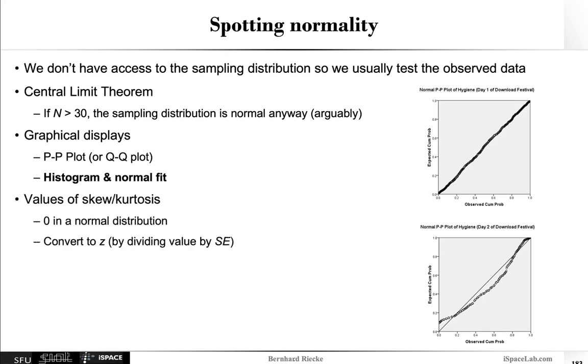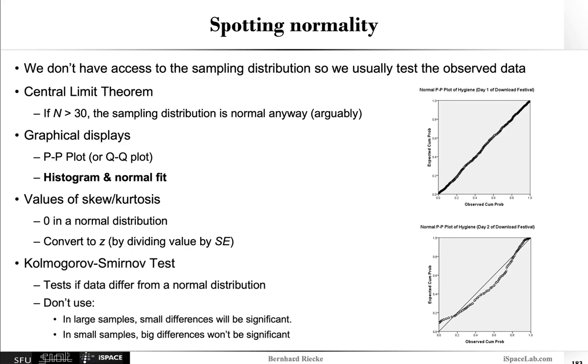You can also look at the values of the skew and kurtosis so it should be zero in a normal distribution and you can always convert to z values by dividing the values by the standard error. And of course you can run a Kolmogorov-Smirnov test to test if the data really differ from the normal distribution. Keep in mind you shouldn't really use this for very large samples because then small differences will be significant but for very large samples you should really have a fairly normal distribution anyways and keep in mind in small samples big differences won't really be significant that easily.